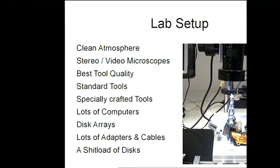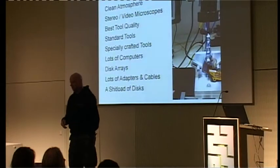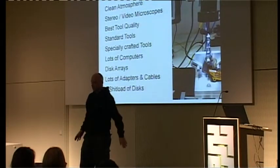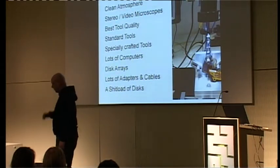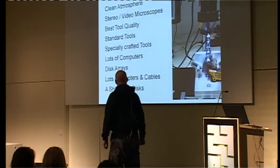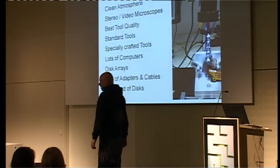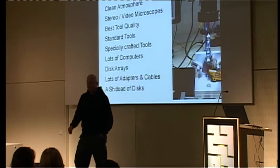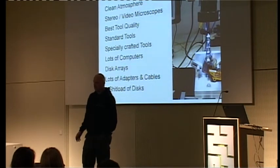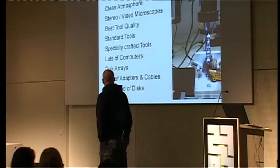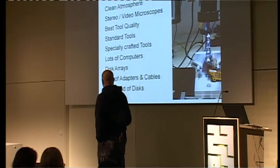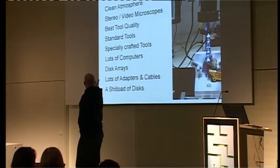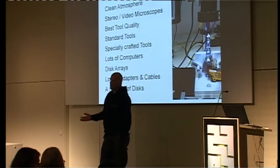Then you need a little bit of microscopy — I'll show pictures from the microscope later. Sometimes alignment of heads is very critical, meaning you need a video microscope to adjust the heads for their correct position on the head arms. It's always good to buy best tool quality. Many people are buying bad tools — no tools are better than bad tools. In this business we use standard tools and specially machined, specially crafted tools, because they're not available on the market.